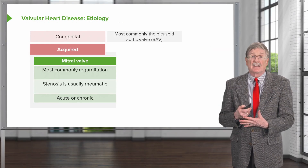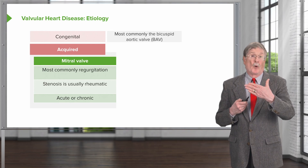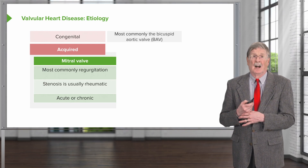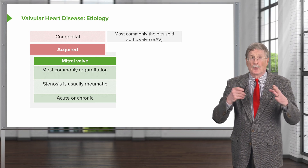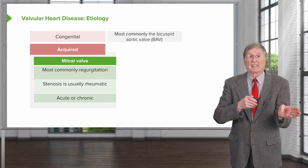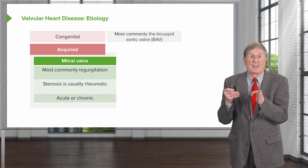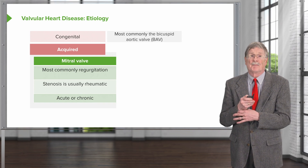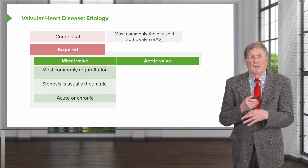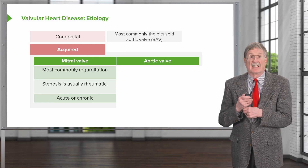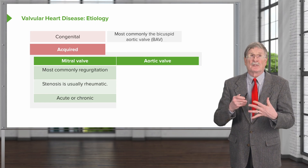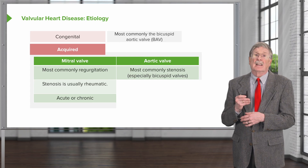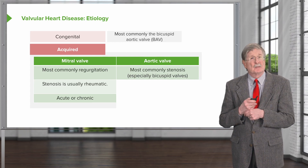The mitral valve diseases, whether it's regurgitation or rheumatic, can be acute or chronic. And so there is a tempo of effects on the mitral valve, and clearly there's a tempo of compensation by the myocardium. The aortic valve, which is second in the most common valvular diseases, is most commonly stenosis.